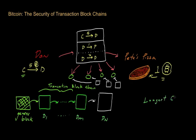This is actually a confusing piece of terminology, because by 'longest' we don't mean that this chain is long in any physical sense. By the longest chain, we really mean the chain that has the most work. The way that work is defined is you look at all these different difficulty scores and add them up — that gives you a difficulty score for the entire chain — and we call the chain with the most work the longest chain.